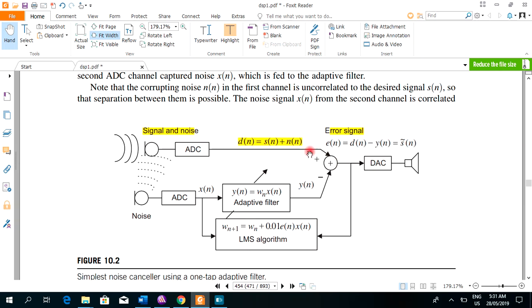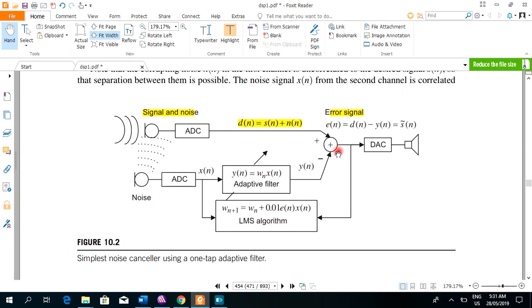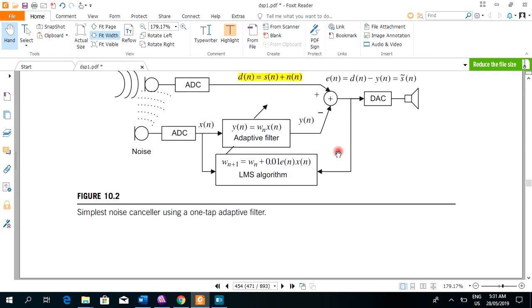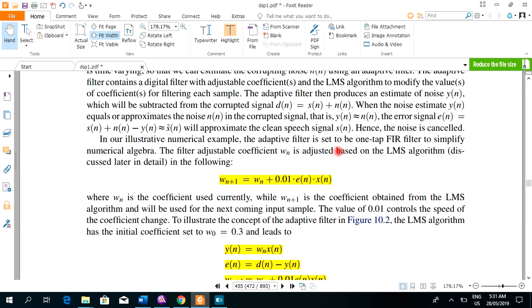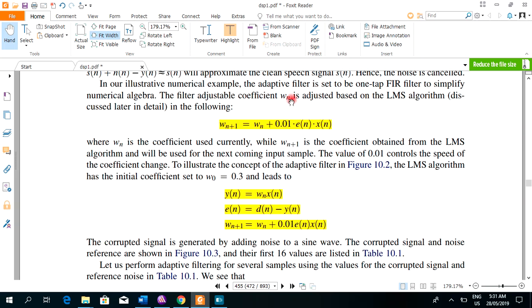The final output will be the corrupted signal minus the output of the adaptive filter. This is the equation to calculate weight update. This is the equation to calculate output of the adaptive filter. This is the formula for calculating the error signal.